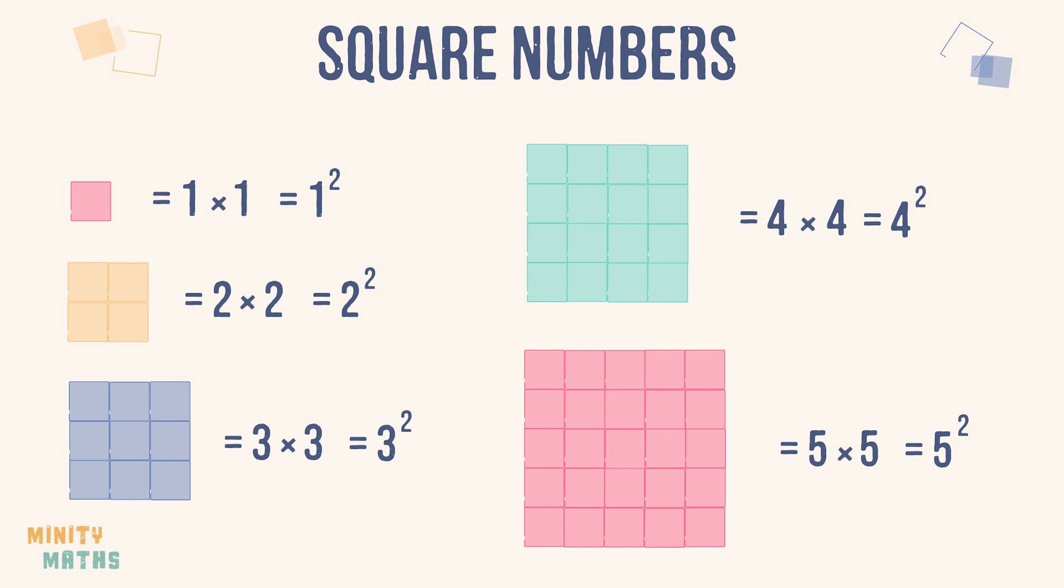For example, 4 times 4 can be read as 4 squared. So here we have the first 5 square numbers: 1, 4, 9, 16, and 25.